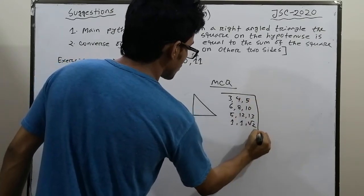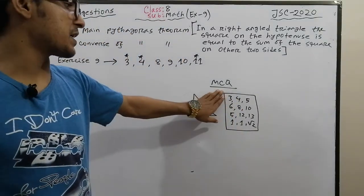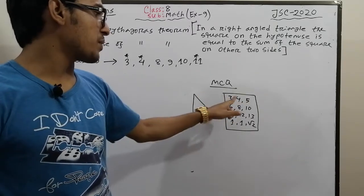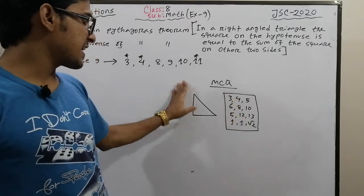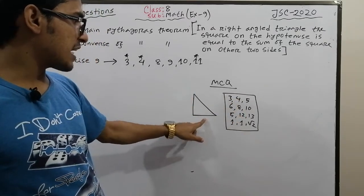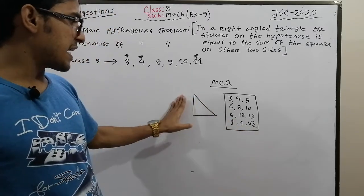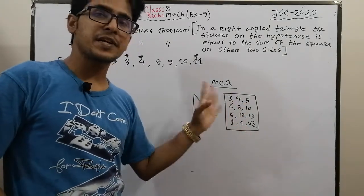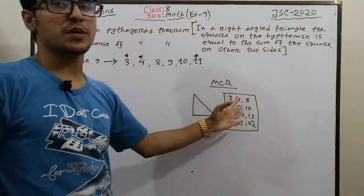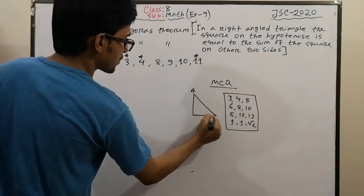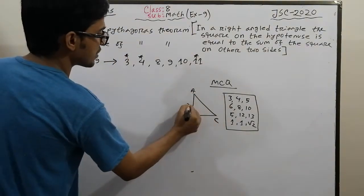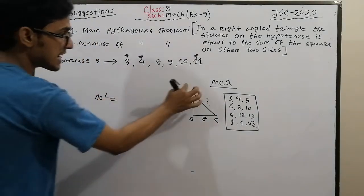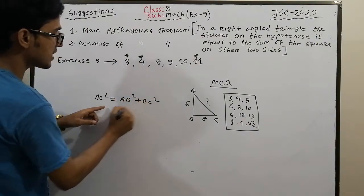If you have a right-angled triangle with sides 3 and 4, the hypotenuse is 5. If sides are 1 and 1, hypotenuse is √2. If sides are 5 and 12, hypotenuse is 13. Now let's apply the formula: AC² = AB² + BC². For 6-8-10: 6² + 8² = 36 + 64 = 100, and √100 = 10.